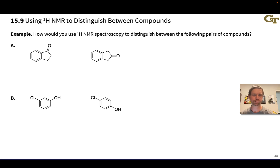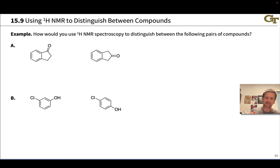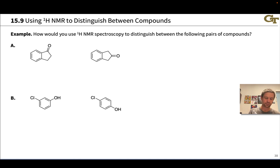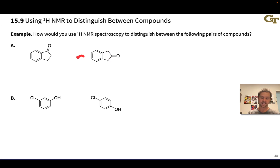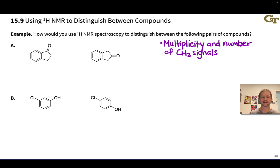Here we're interested in recognizing ways we can use proton NMR to distinguish between distinct compounds. We're asked to explain how to use proton NMR spectroscopy to tell the difference between each pair. In pair A, both molecules have similar functional groups — this is a testament to the power of NMR, that it can distinguish easily between compounds just based on differences in connectivity. The difference is really in the CH2 groups: they're next to each other in the first compound but separated by the carbonyl group in the second. Furthermore, the second compound has a symmetry that the first does not, suggesting we can use differences in the multiplicity and number of CH2 signals to tell them apart.